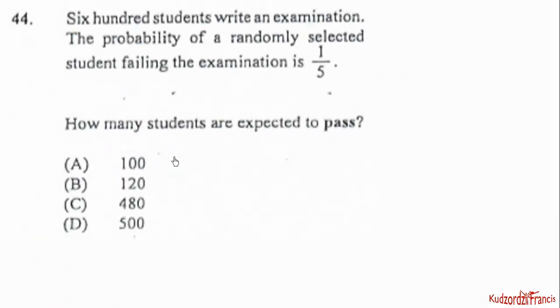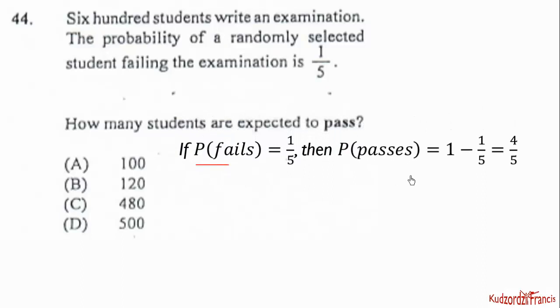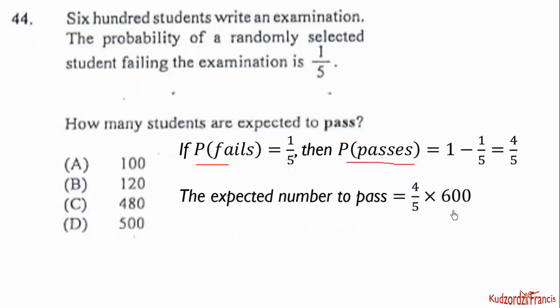Item 44: 600 students write an examination. The probability of a randomly selected student failing is 1 out of 5. The complement — probability of passing — is 1 minus 1/5, which is 4/5. The expected number of students who pass is the probability times the total: (4/5) × 600 = 480. The correct answer is option C.